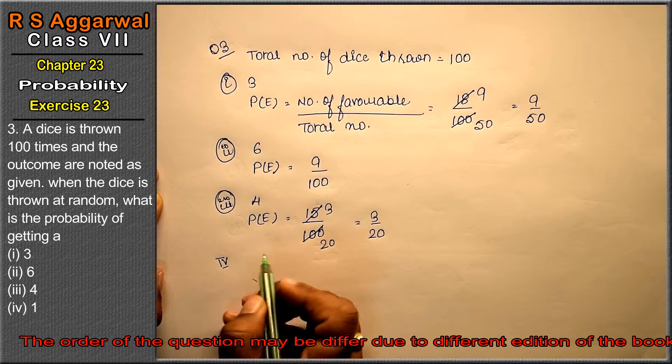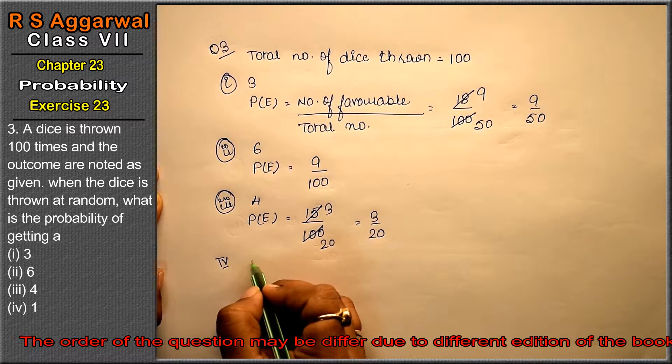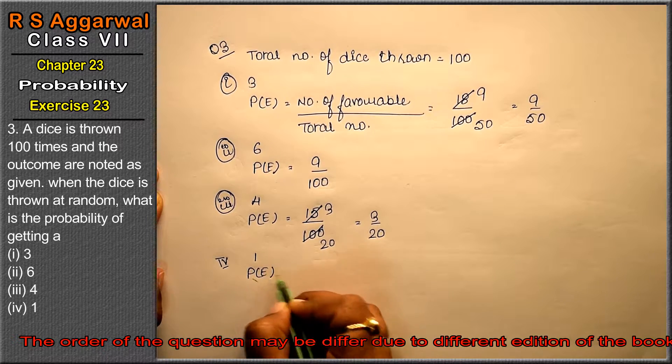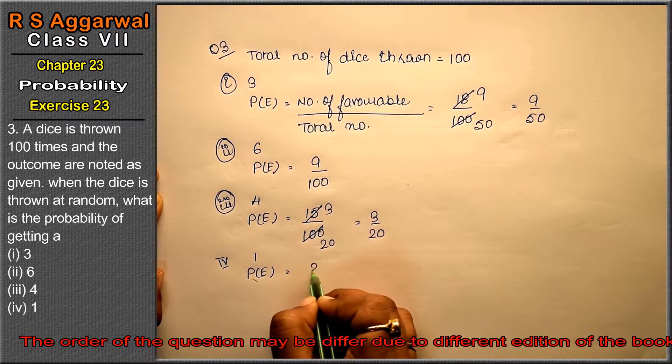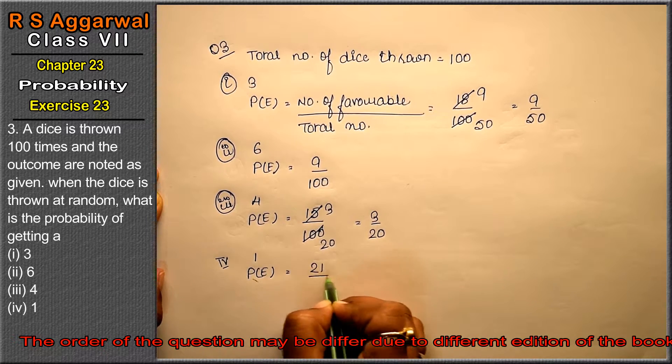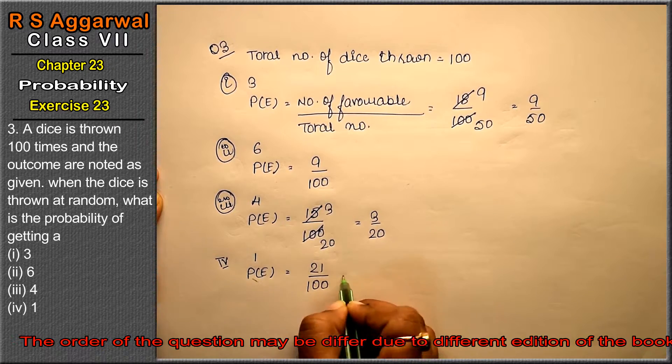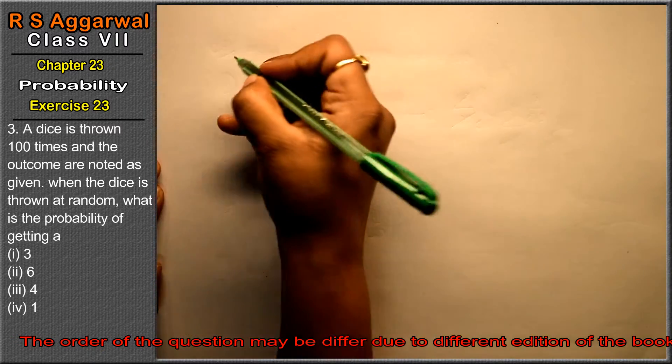In the 4th part, what is the probability of getting 1? The frequency of getting 1 is 21 out of 100 tosses. So 21 upon 100 is the answer.